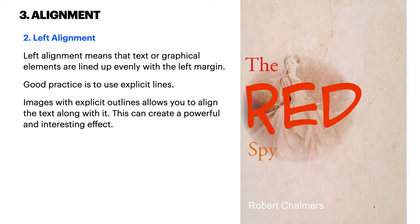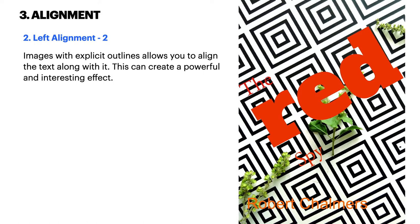A second centered example shows centered alignment with interesting formatting — text shapes, colors, and fonts attract interest. The word 'Red' has been put on its side, there's a huge image of a gun, and the color will attract the eye. It's also very on-genre. For left alignment, text or graphical elements are lined up evenly with the left margin. Images with explicit outlines allow you to align the text along with them — this can create a powerful and interesting effect, as seen with 'Red Spy' aligned along the lines of the pattern on the cover.